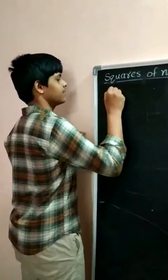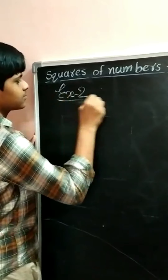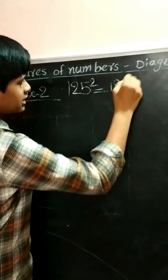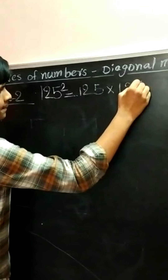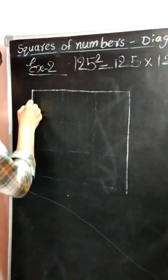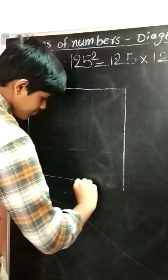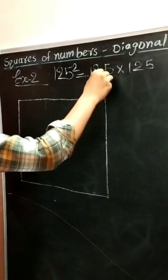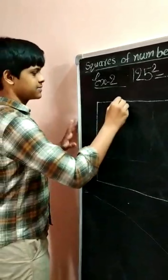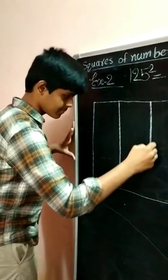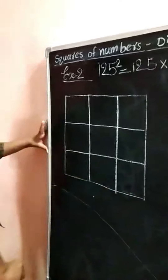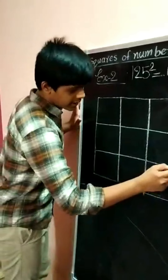125 squared equals 125 into 125. Draw a square. Here the 3-digit number is multiplying with a 3-digit number, so make the square with 3 rows and 3 columns — total 9 squares. Draw the diagonal to each square.